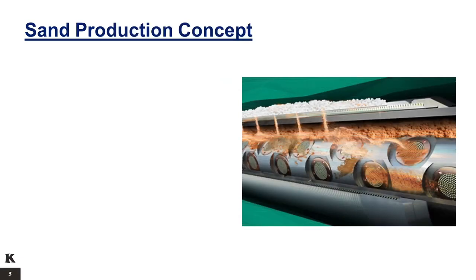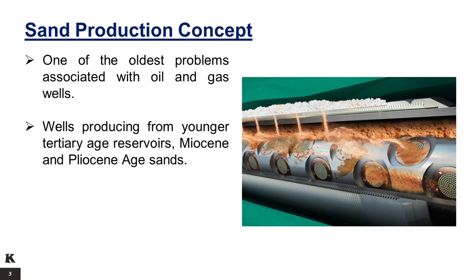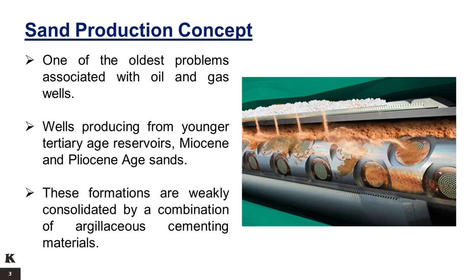Sand production concept. Sand production associated with oil and gas wells is one of the oldest problems facing the petroleum industry. This problem occurs throughout the world in wells producing from younger tertiary age reservoirs, particularly in the Miocene and Pliocene age sands. Typically, these formations are weakly consolidated by a combination of argillaceous cementing materials, the interaction of intergranular friction and in-situ stresses, capillary forces, and in some cases by the viscosity of the fluids in place.